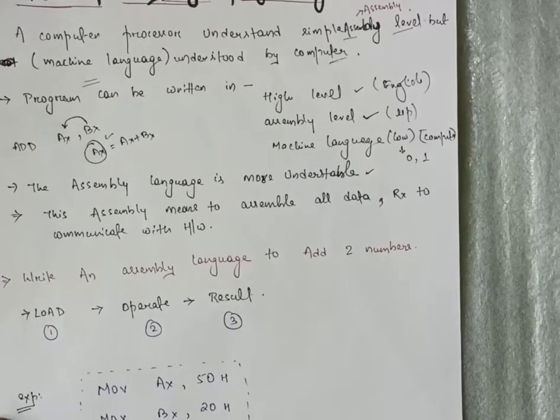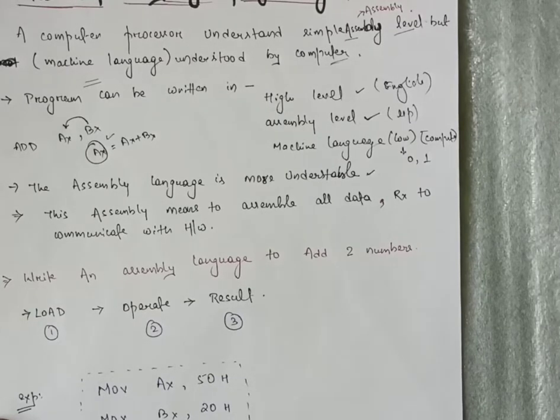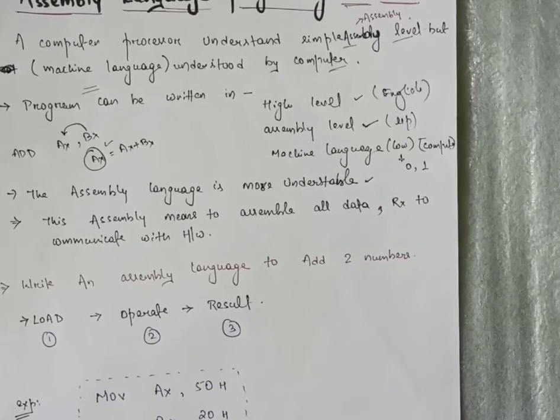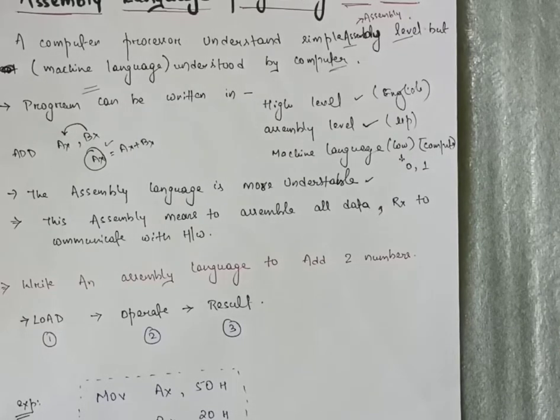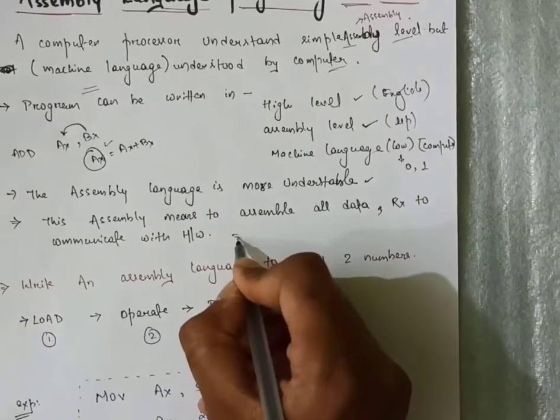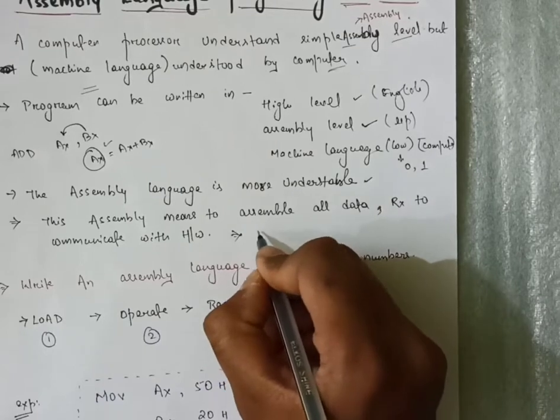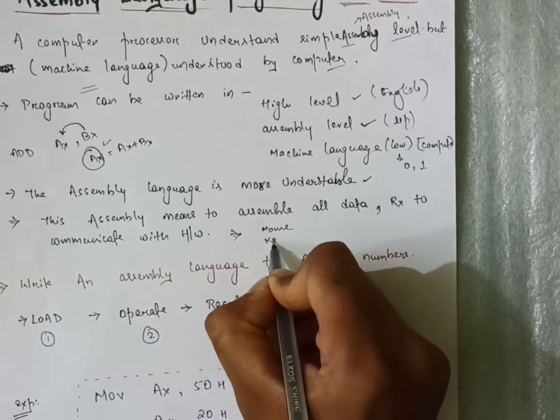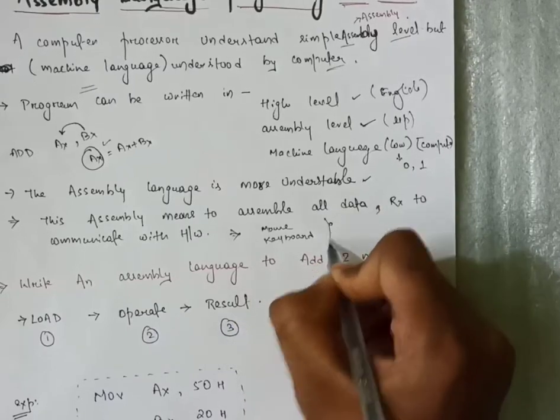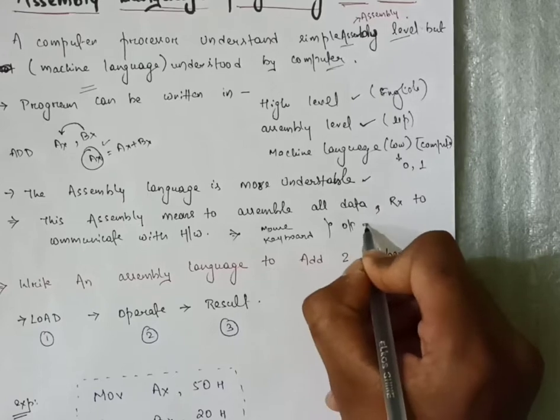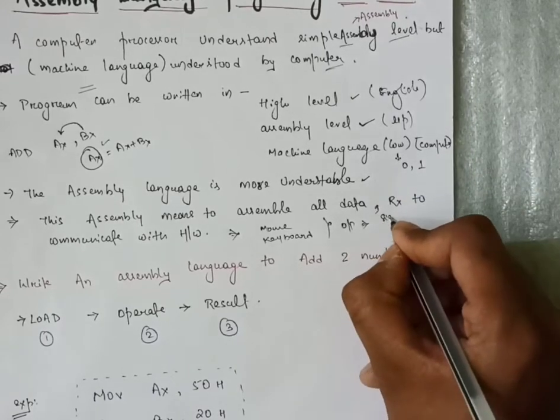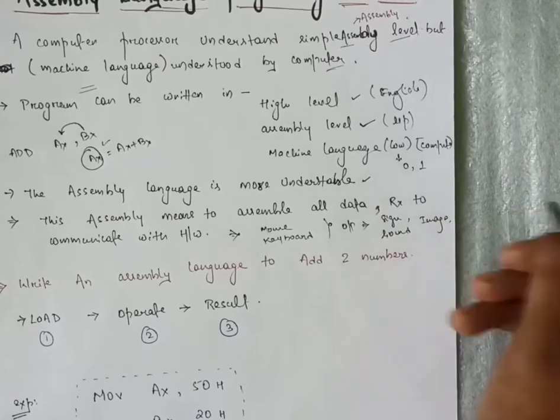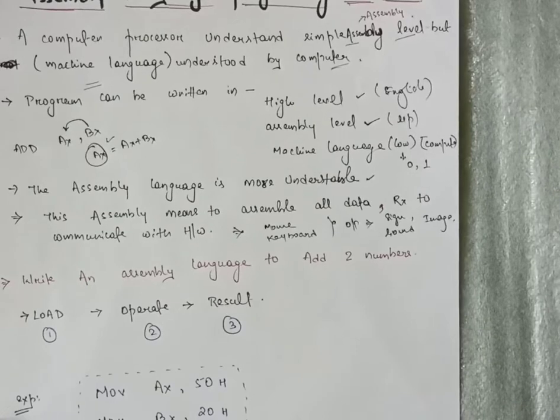This assembly means to assemble all data. Assembling means gathering all the data either from register or from memory. Why are we collecting this data? To communicate with the hardware, whatever hardware is present in a machine. For example in a computer, we are giving input from our mouse, keyboard, and we observe the output in the form of readable signs, sounds, or images.